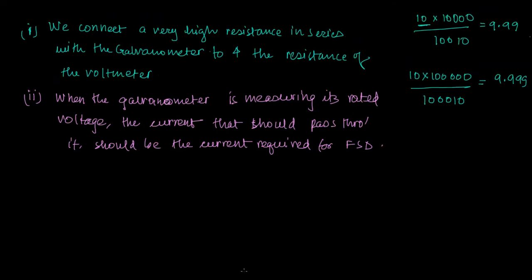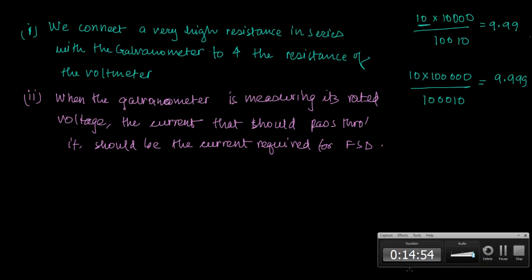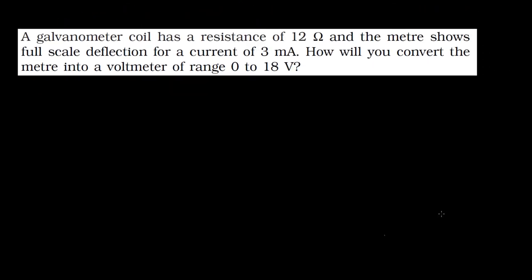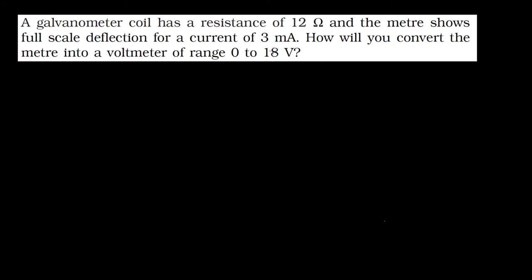Now let's solve a question based on this. We have a galvanometer coil with a resistance of 12 ohms, and the meter shows full scale deflection for a current of 3 milliamperes. How do we convert the meter into a voltmeter of range 0 to 18 volts? That means we intend to connect this voltmeter across a voltage of at most 18 volts.